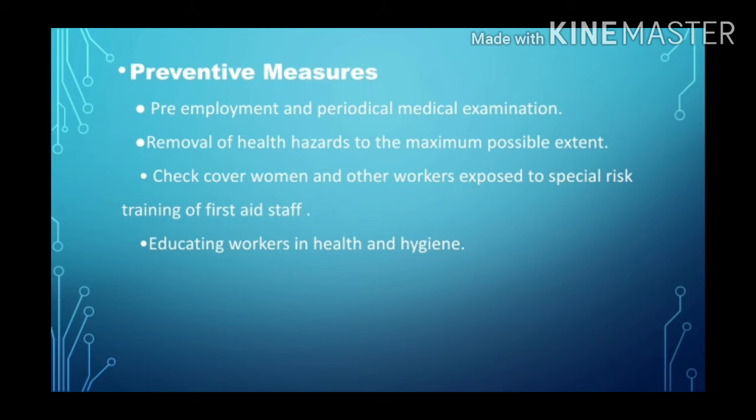Chemical substance factors such as alkalis and carbon dioxide can pose high risks. By removing fumes and harmful pipes from the industry, we protect our workers. We must remove health hazards to the maximum possible extent. The third preventive measure is to check over women and other workers exposed to special risk categories and ensure safety measures are in place for them.